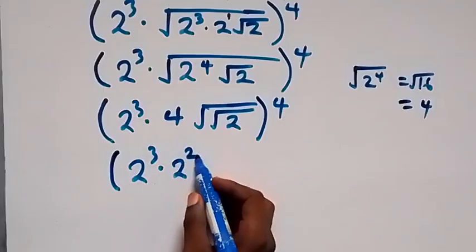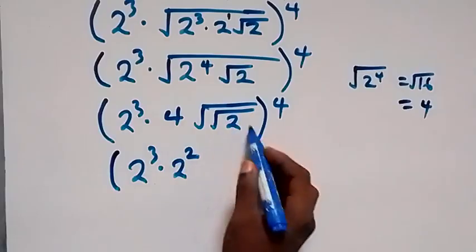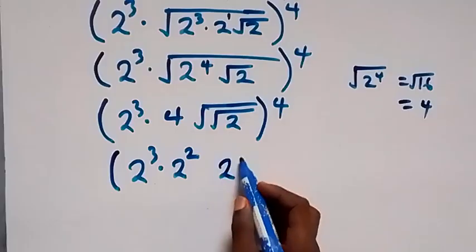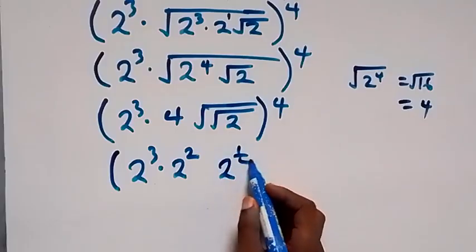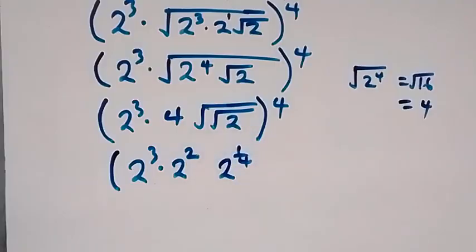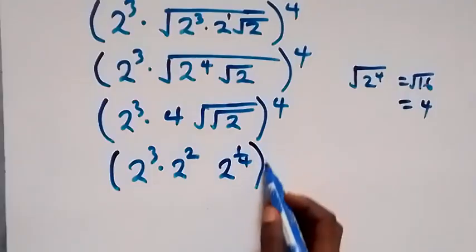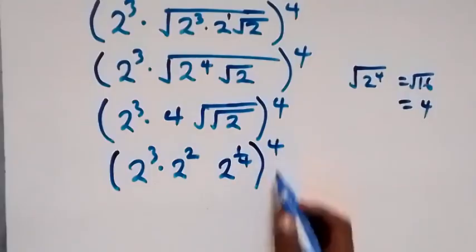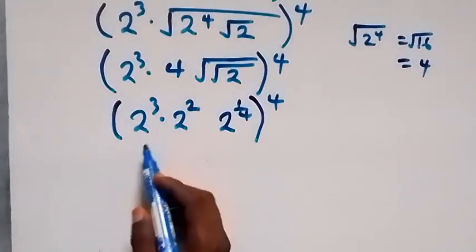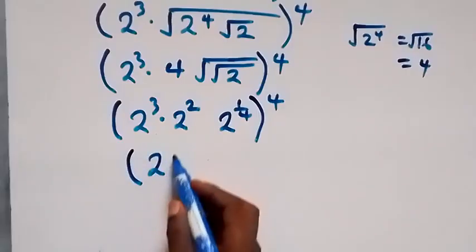Then when we write this in base two as well, we can say this is two raised to power two — same thing as four. Here we can write this as two raised to power one over four, that is two raised to power half — the square root — then another raised to power half, that is one over four, then all raised to power four.